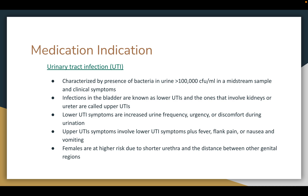The medication is commonly indicated for urinary tract infections, characterized by the presence of bacteria in the urine in a midstream sample with clinical symptoms. Infections in the bladder are known as lower UTIs, and those involving the kidney or ureter are called upper UTI infections. Lower UTI symptoms include increased urine frequency, urgency, and discomfort during urination. Upper UTI symptoms involve those same lower UTI symptoms plus fever, flank pain, nausea, and vomiting. Females are at higher risk for UTIs due to a shorter urethra and the distance between other genital regions.